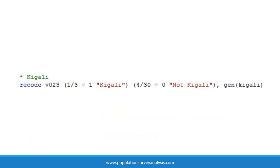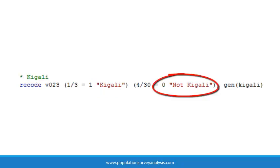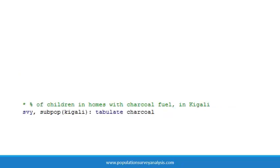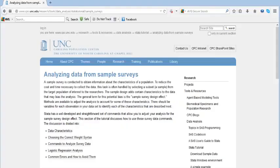To use the subpop option, we need to generate a variable that has the value of 1 for the observations in the subpopulation, and a value of 0 for those who should be excluded. Here is an example where we create a variable called Kigali for those people living in one of the three districts that comprise the capital city of Rwanda, Kigali, where 1 equals Kigali and 0 equals not Kigali. To estimate the percent of children whose families cook with charcoal in Kigali only, we write: svy, subpop(Kigali): tabulate charcoal. Check out the Carolina Population Center website for additional Stata analysis learning materials, and go to populationsurveyanalysis.com for a PDF version of this video and other learning materials.